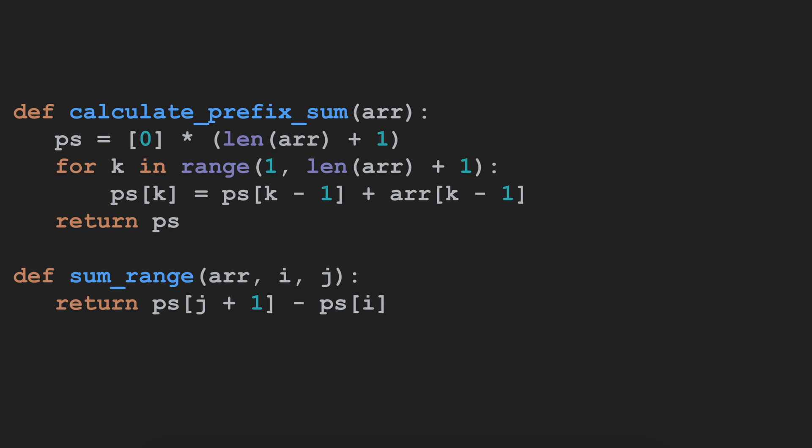And the Python code in this case, we are running two methods. First one is calculate_prefix_sum which is creating a new array and adding all our values. It's a global variable, we are calling calculate_prefix_sum only once.